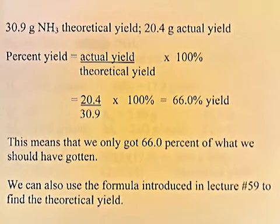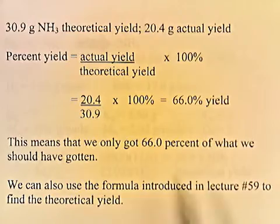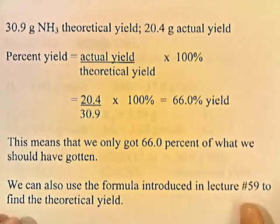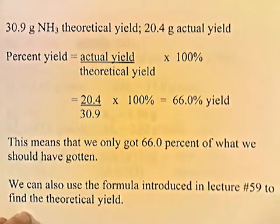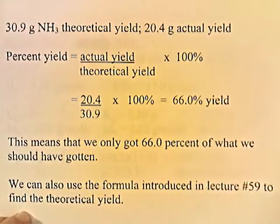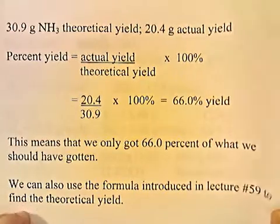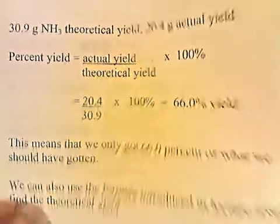We can also use the formula introduced in lecture 59 to find the theoretical yield, if all the factor-labeling setup is confusing. Using that formula, we would solve it this way.